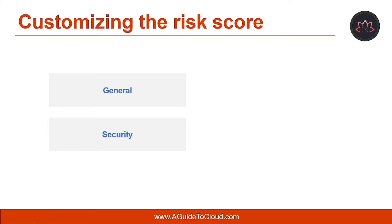The second category is Security. The security category takes into account all standards dealing with the physical security of the data utilized by the discovered app. This includes fields such as multi-factor authentication, encryption, data classification, and data ownership. The third category is Compliance. This category displays which common best practice compliance standards are upheld by the company that produces the app. The list of specifications includes standards such as HIPAA, CSA, and PCI DSS.